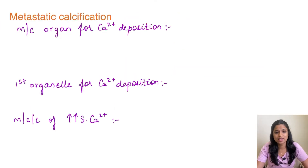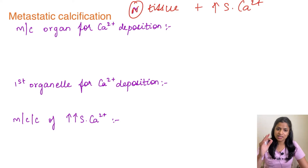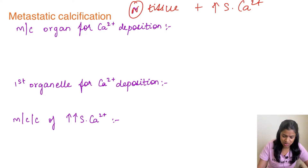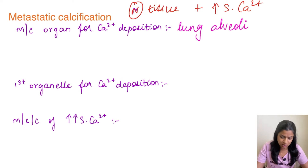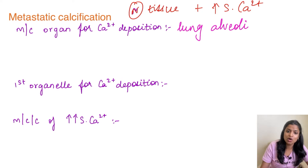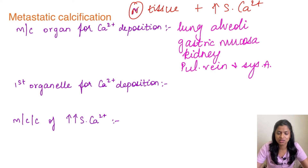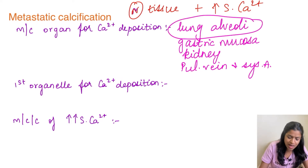Moving on to metastatic calcification: it is seen in normal tissue but with increased serum calcium. The most common organ where calcium deposits is the lung alveoli. Other organs include the gastric mucosa, kidney, pulmonary veins, and systemic arteries. All of these tissues are alkaline in nature — they secrete acid — and this alkaline nature attracts calcium, causing deposition in these tissues.